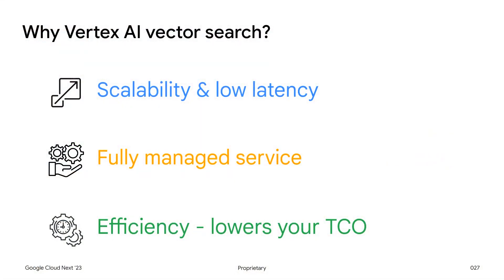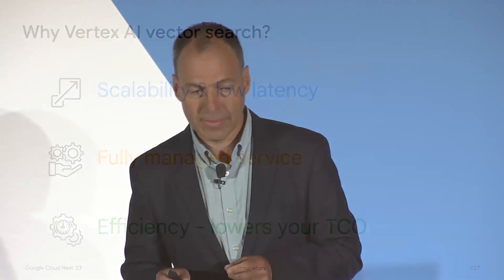Why use Vertex AI Vector Search? First, it's enterprise-ready: you can perform search over a billion embeddings at high throughput with super low latency. Second, it's a fully-managed solution that auto-scales, so you don't have to worry about managing infrastructure and can focus on building great products. Third, it's very efficient — thanks to the underlying algorithm, it lowers your total cost of ownership compared to other approaches.